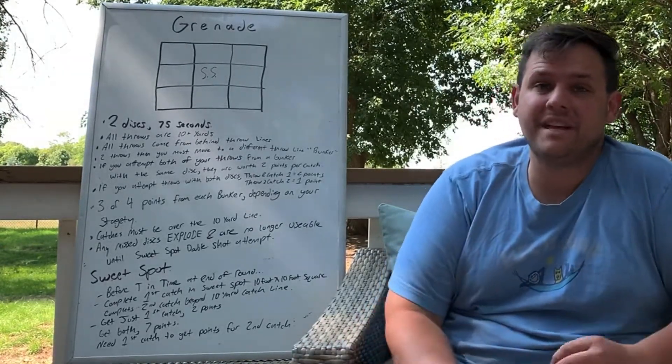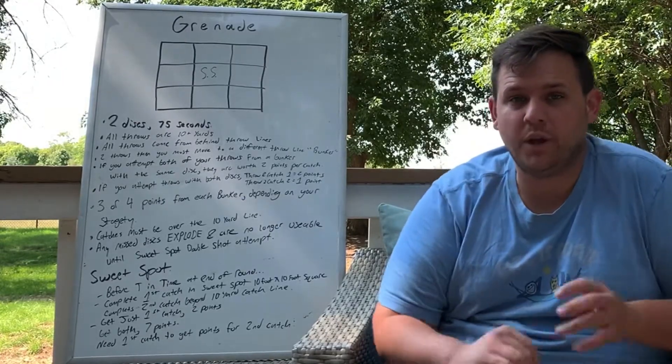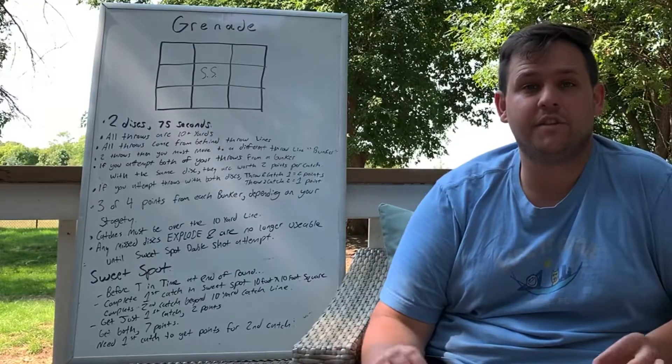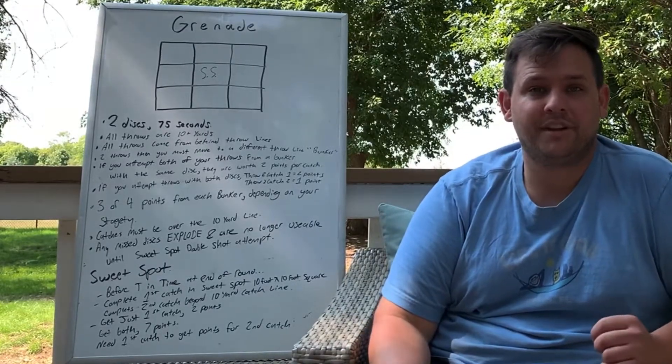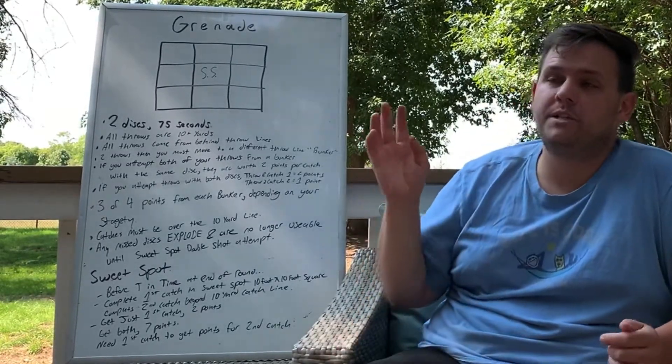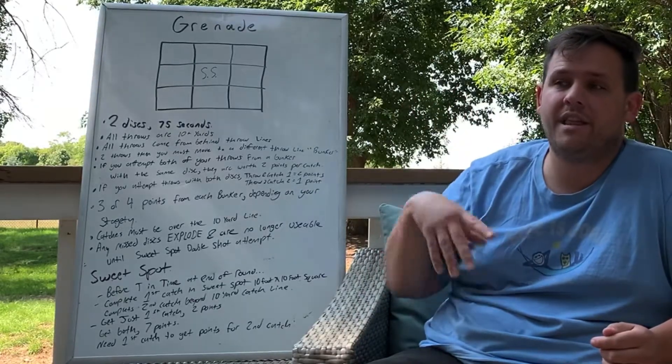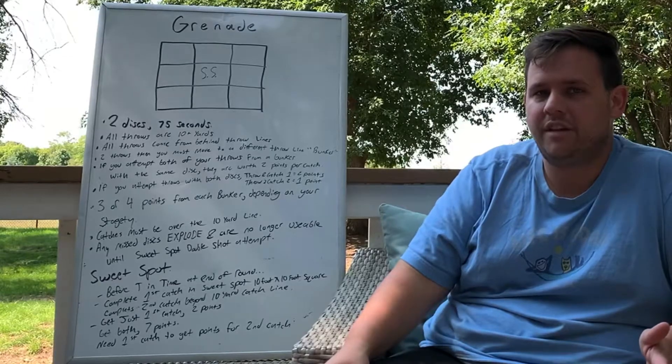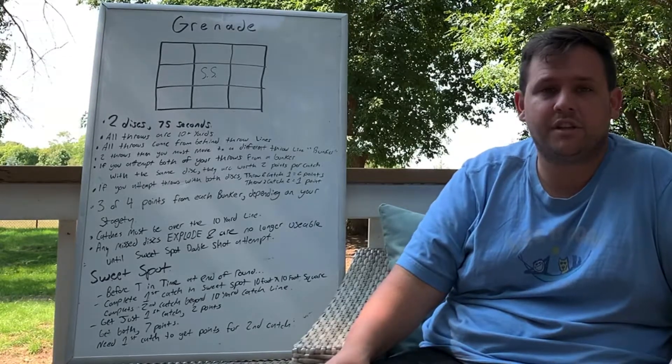Any disc that is missed during the round explodes and is unusable for the rest of the game until the sweet spot opportunity. Basically, you're just going to be doing two throws from each throwing line and then moving on. You're going to do whatever you want for your strategy for disc utilization and how to score points.